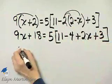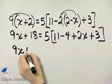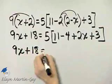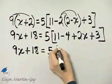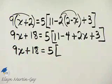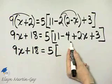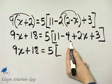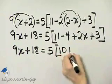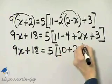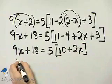So what do I have? I have 9x plus 18 on the left side. Nothing can be combined, unlike terms. Why don't we go ahead and combine like terms on the right side within this set of brackets first. 11 minus 4 is 7, and 7 plus 3 is 10 plus 2x. And now let's continue.